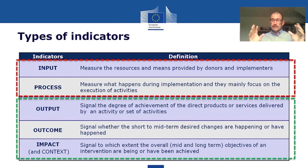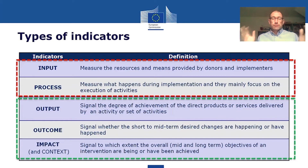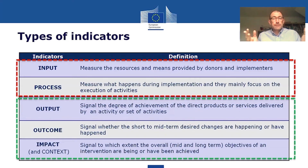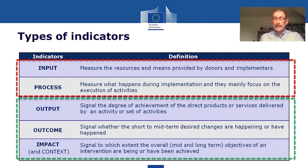Process indicators tell you where the project is in its progress towards delivering outputs. That's where they're useful — because if you just relied on the output indicator, you'd say the implementing partner hadn't done their job since the output (a built hospital) wasn't there yet. So that's an easy way to understand what process indicators are and how useful they can be.